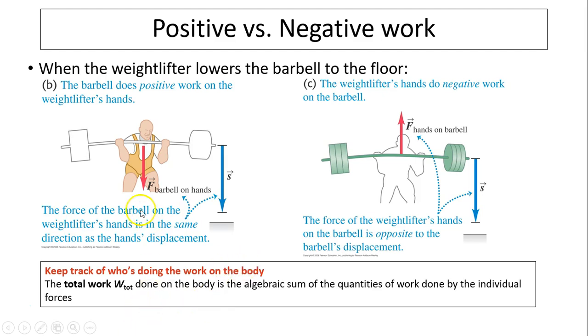Let's see positive versus negative work. A weightlifter lowers the barbell to the floor. The barbell does positive work on the weightlifter's hand because the barbell is exerting a downward force and the hand is also going downward. However, the weightlifter's hand does negative work on the barbell because the hand is exerting an upward force but the barbell is moving downward. It's very important to keep track of who is doing work on what body. The total work done on the body is the algebraic sum of the quantities of work done by individual forces.